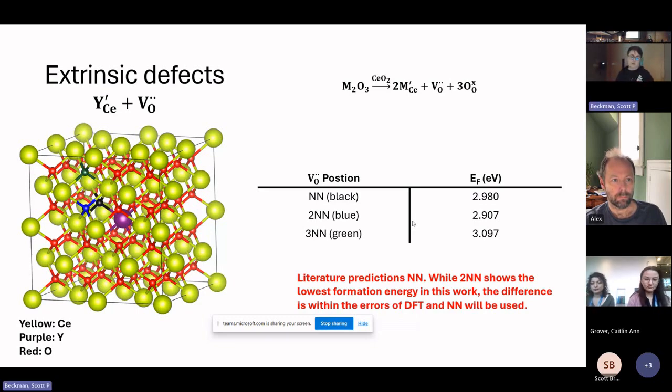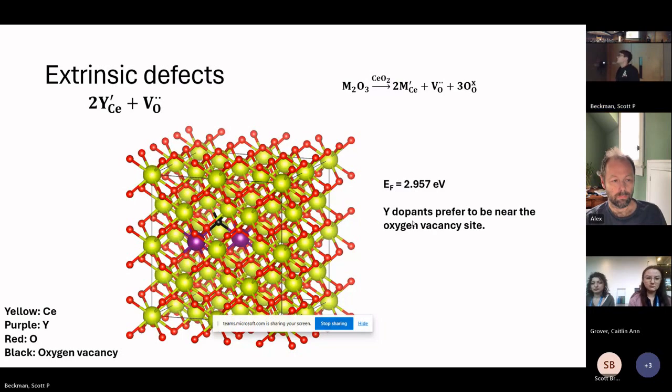Now in order to look at this full Kroger-Vink notation, I introduce a second yttrium dopant. There's 16 unique combinations for looking at where that second yttrium dopant would be. What I've found is that actually you see a trimer where you have a yttrium dopant and then an oxygen vacancy and then the yttrium dopant right beside it. You can see from the formation energy here of 2.957 that this is significantly lower than what you're seeing in the intrinsic defects.